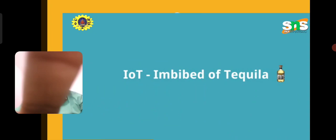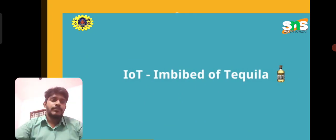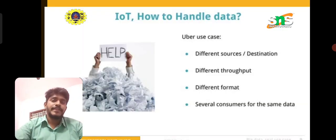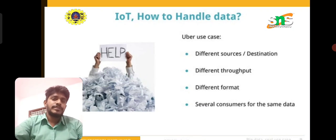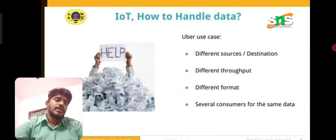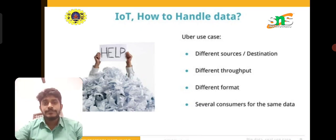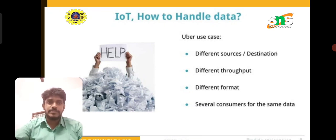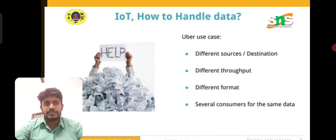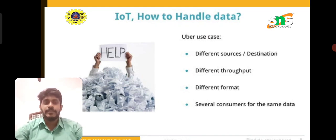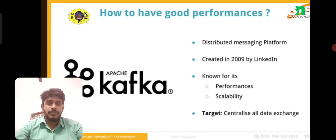Key challenges include throughput variation, fraud detection, low latency, and scalability. This is an IoT-embedded technology. In this case study, the major use cases involve different sources and different destinations — customers use different sources to reach different destinations. There are also different throughput levels, different data formats, and several consumers of the same data.